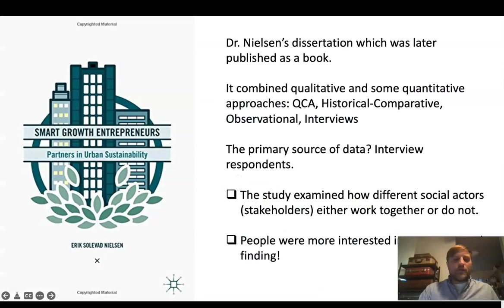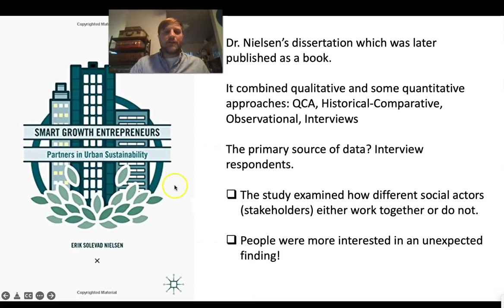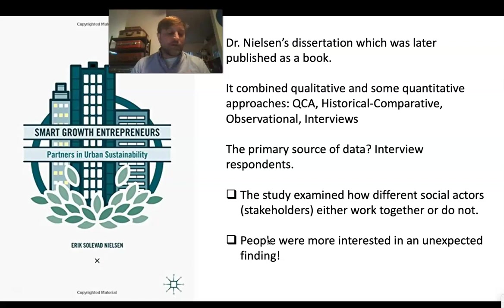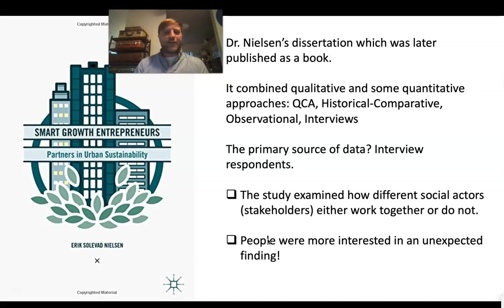A little bit about me. I'm originally from Nebraska. I got my master's in sociology at the University of Kansas. I did research on comparative historical research on the conflict in Darfur in Sudan — I did my master's thesis on that. I came to UC Santa Barbara to continue doing that research, and for a variety of reasons changed directions and started looking at urban development, sustainable urban development on the West Coast.